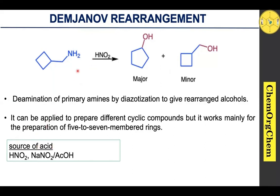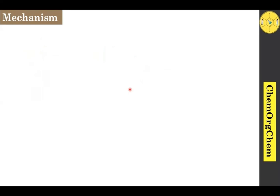Regarding the source of acid: in order to conduct this rearrangement reaction, nitrous acid is mostly used. Sometimes people use sodium nitrite in the presence of acetic acid, which will generate nitrous acid in-situ in order to proceed this Tiffeneau-Demjanov rearrangement.